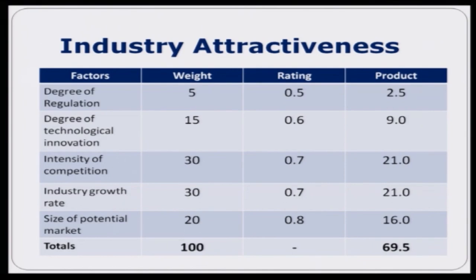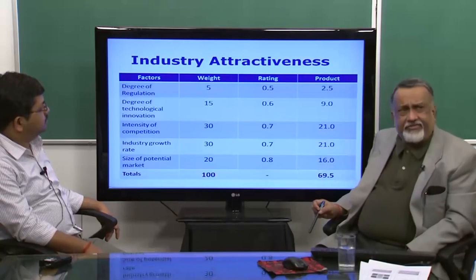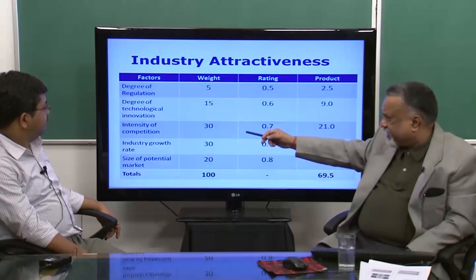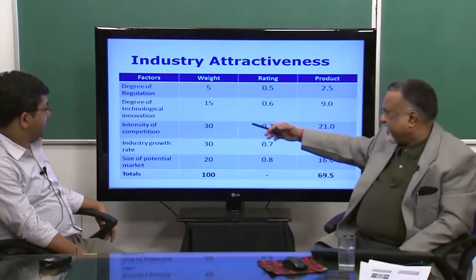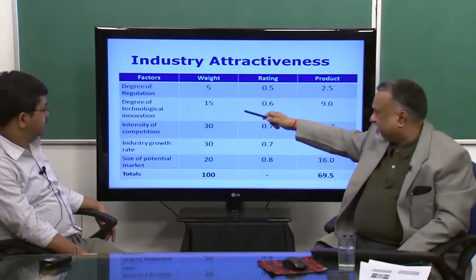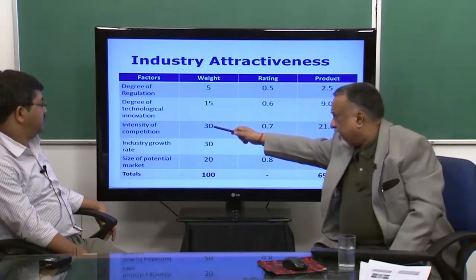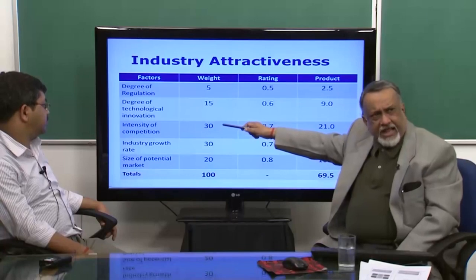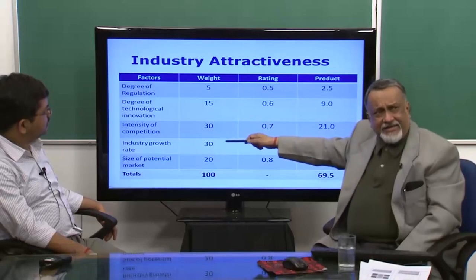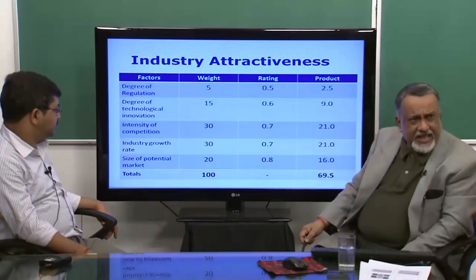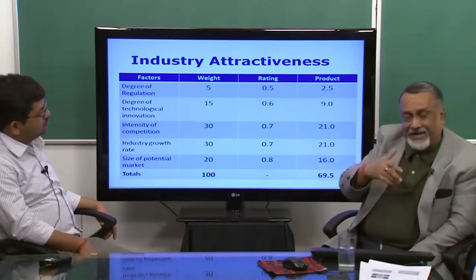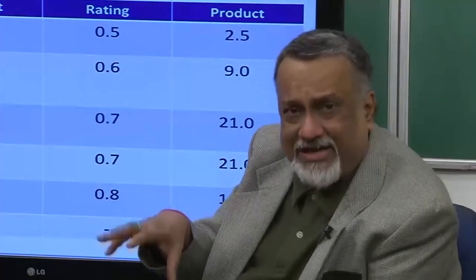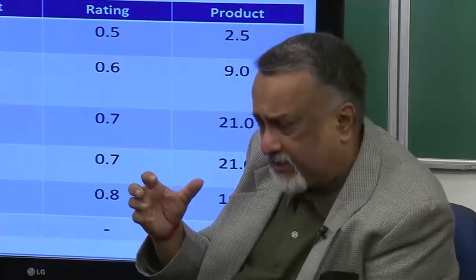This is one way we can study industry attractiveness. We put all the factors — degree of regulation, degree of technological innovation, intensity of competition, industry growth rate, size of potential market — and give them relative weightage. High relative weightage has been given to intensity of competition and industry growth rate, both of which are positive and high. That is why even though there are many competitors, people are still coming in because the industry growth rate is high. This is one of the paradoxes — the higher the growth potential, the higher the number of competitors attracted, like bees drawn to honey.